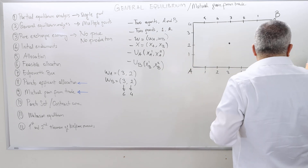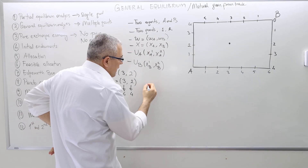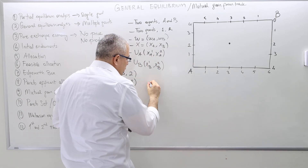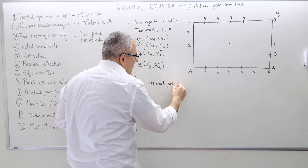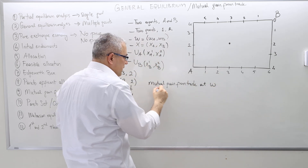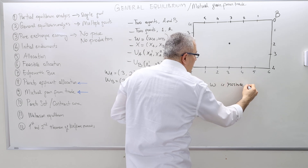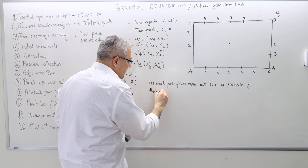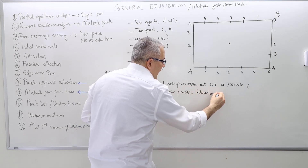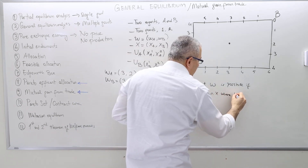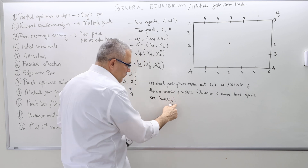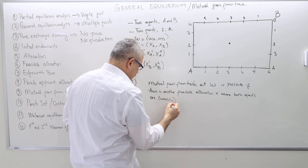So let's stick to our initial example. This is where the initial endowment is. Mutual gain from trade at the initial endowment is possible if there is another feasible allocation — let's call it X — where both agents are weakly better off.